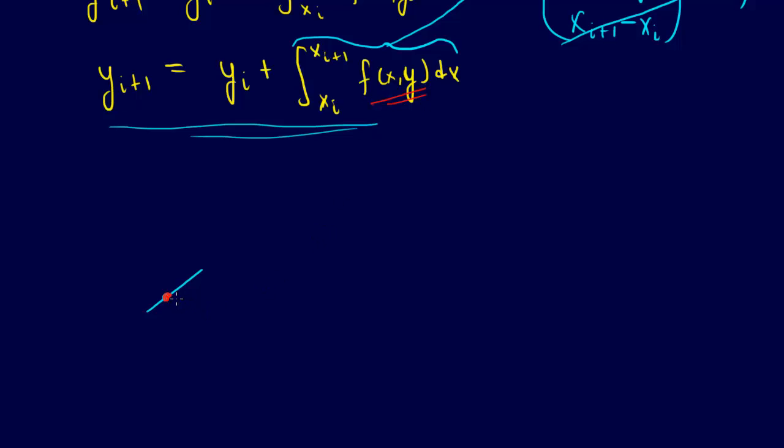So we're given the point, and we're given the slope, and we need to figure out what the next value of the function is. Well, we could just come along here, along the slope, a certain distance, and just say that's our new value.